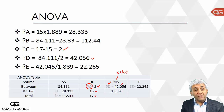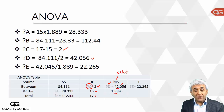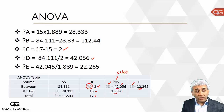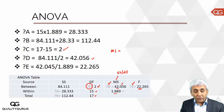Coming to the F value — F is the ratio of between and within mean sum of squares, which is 42.056 divided by 1.889. So E was also easy to calculate: E equals 22.26.